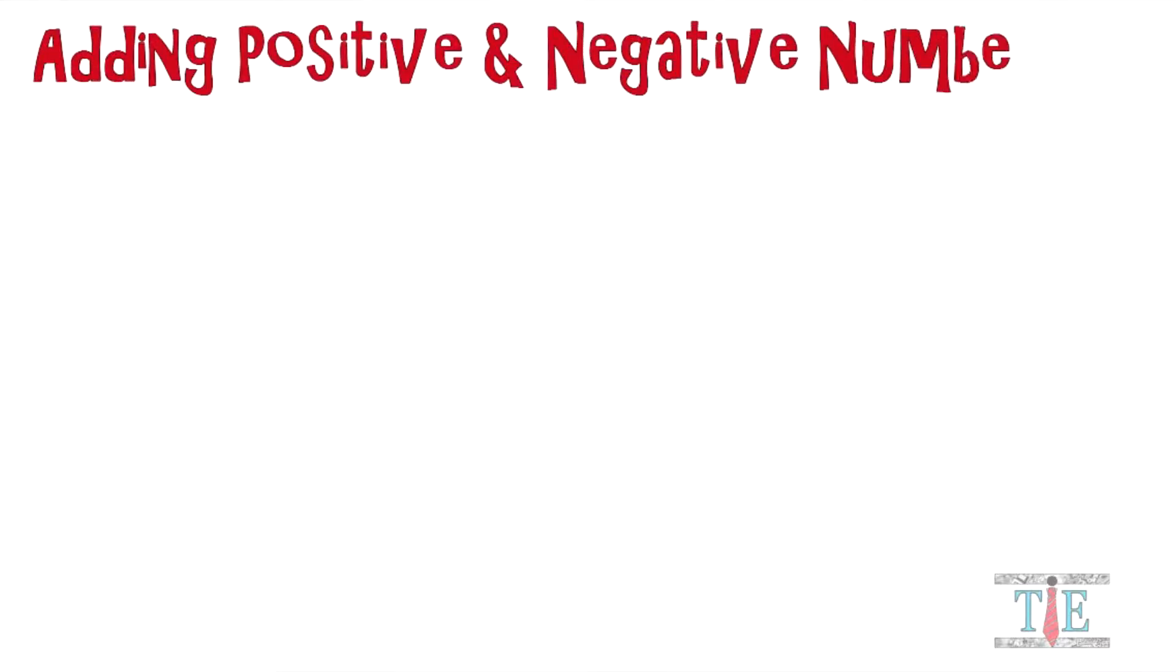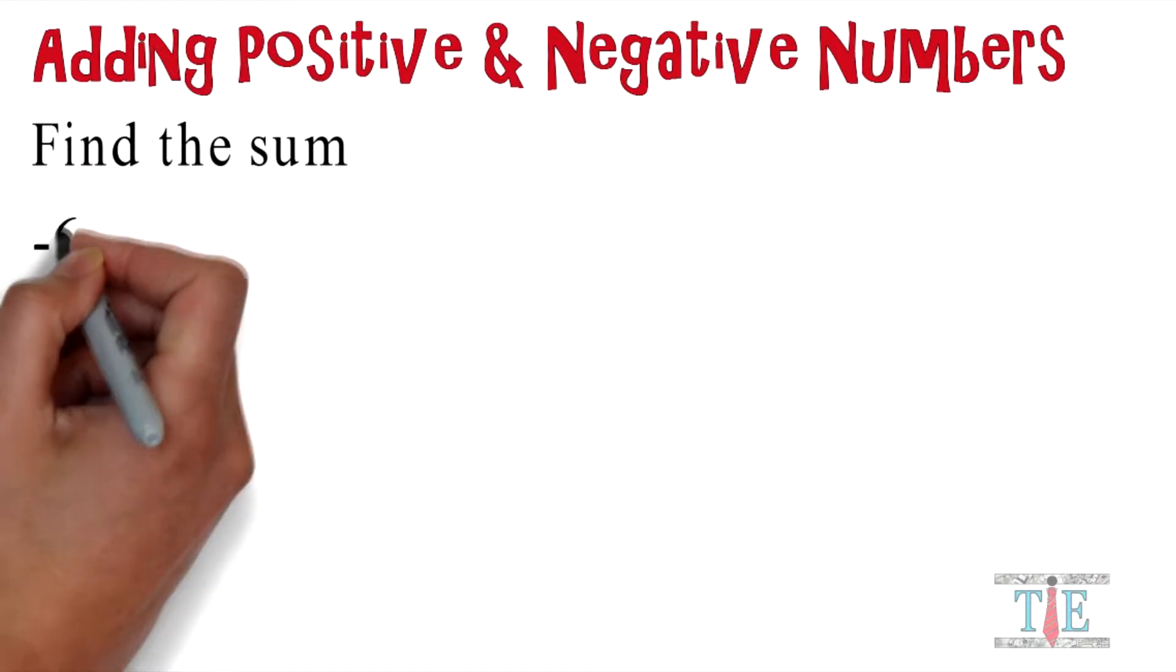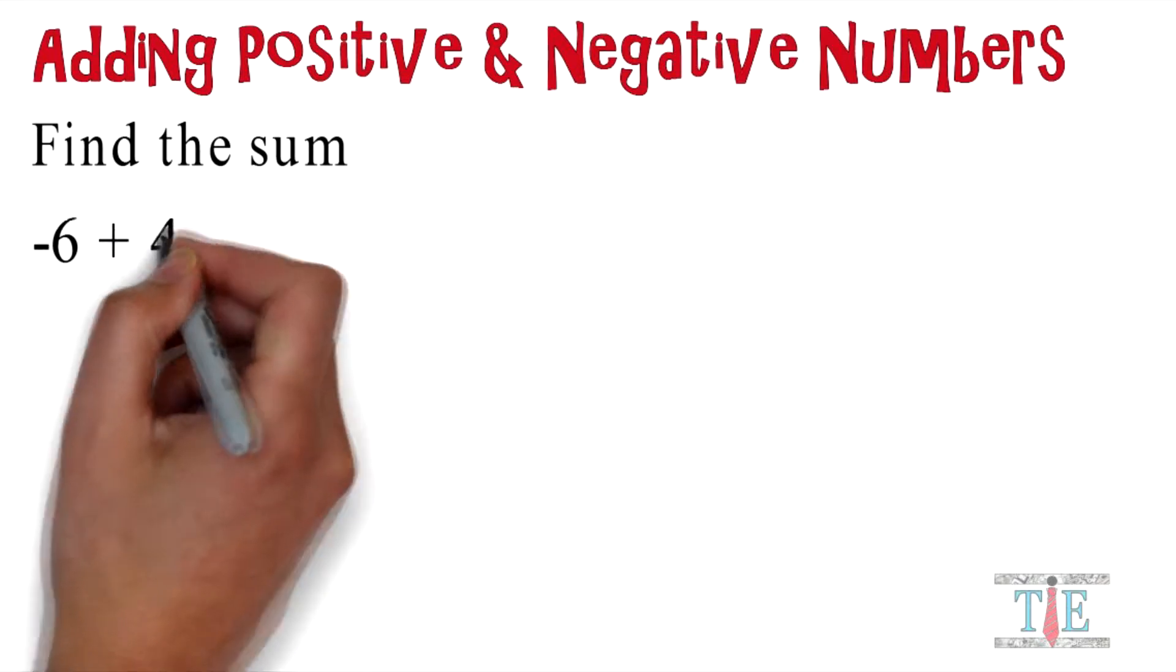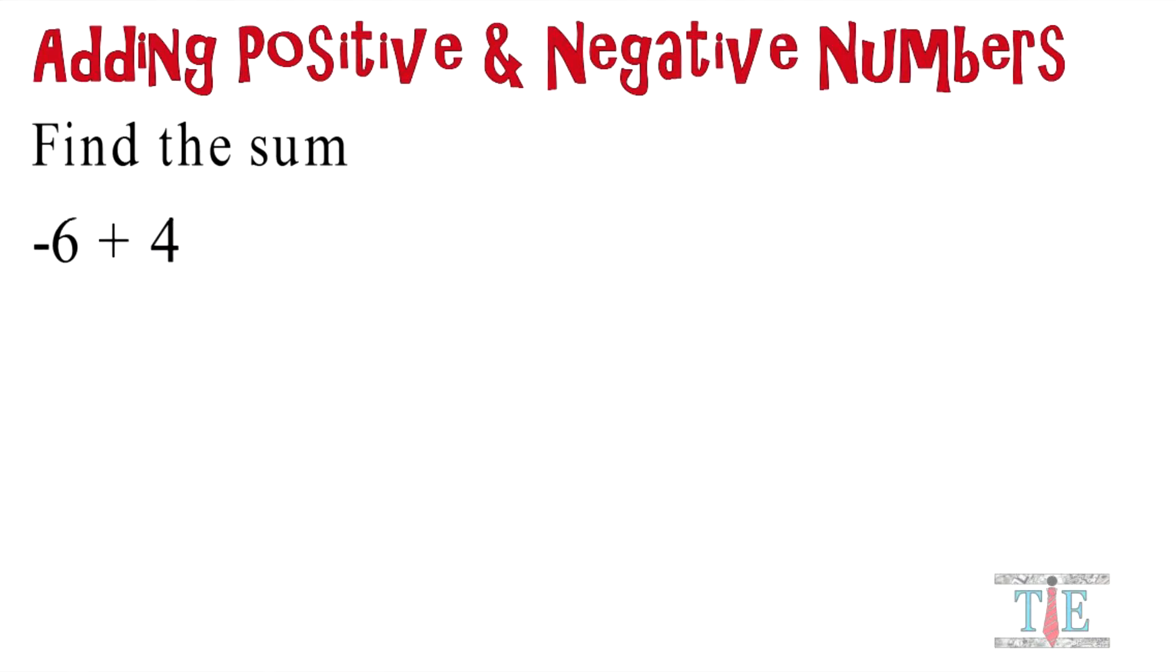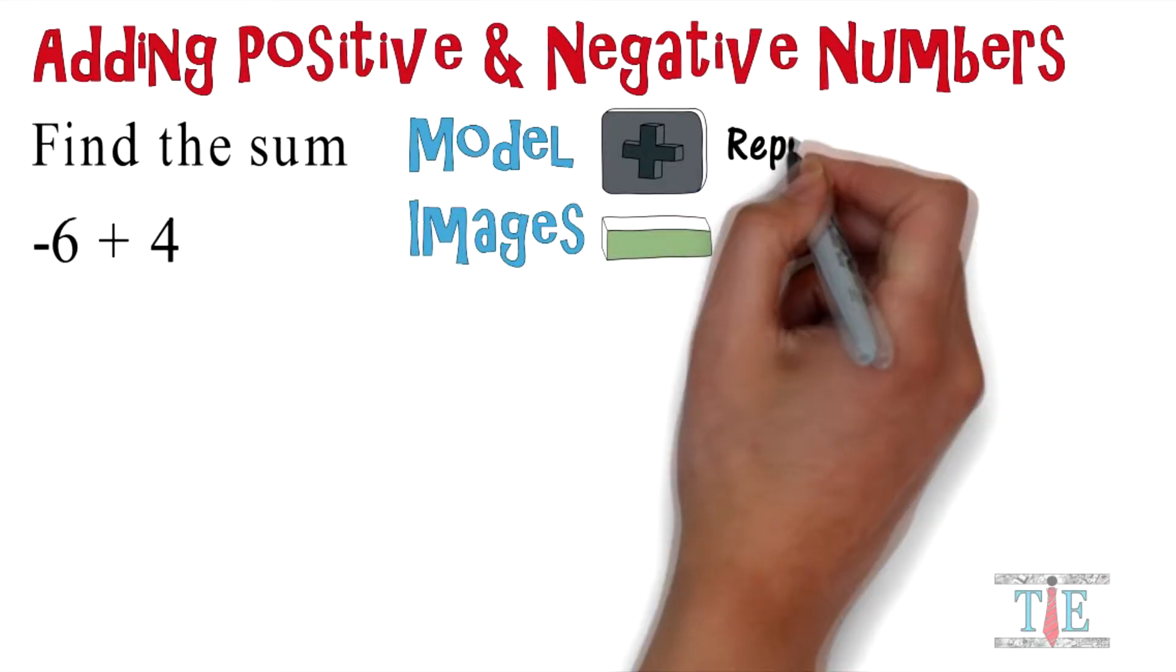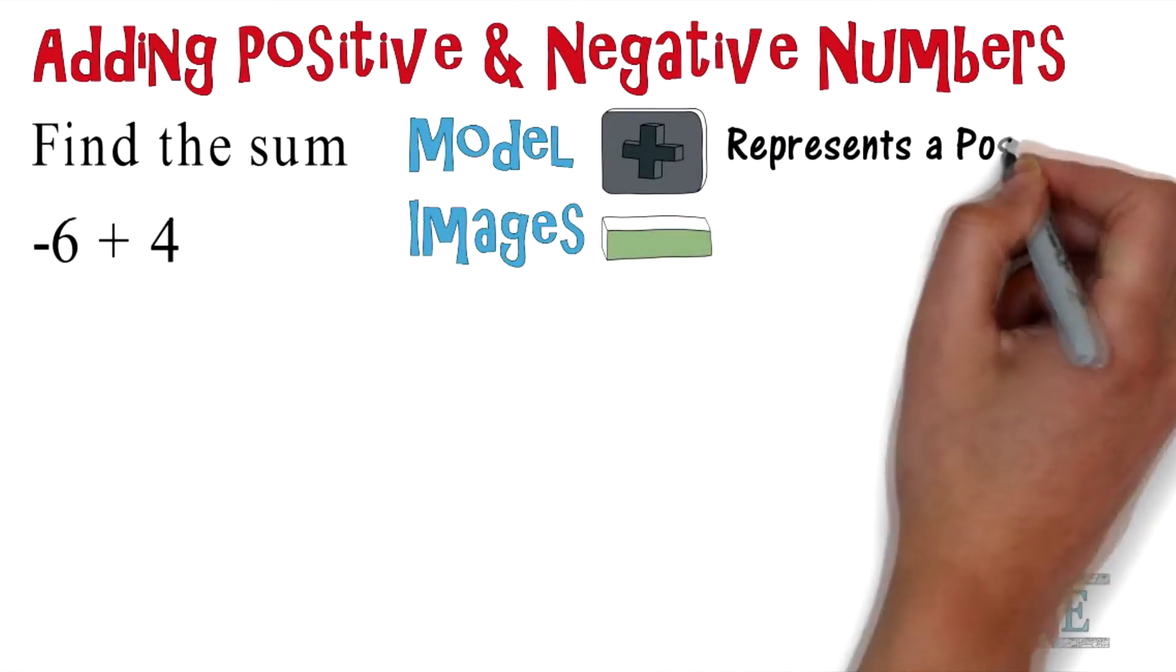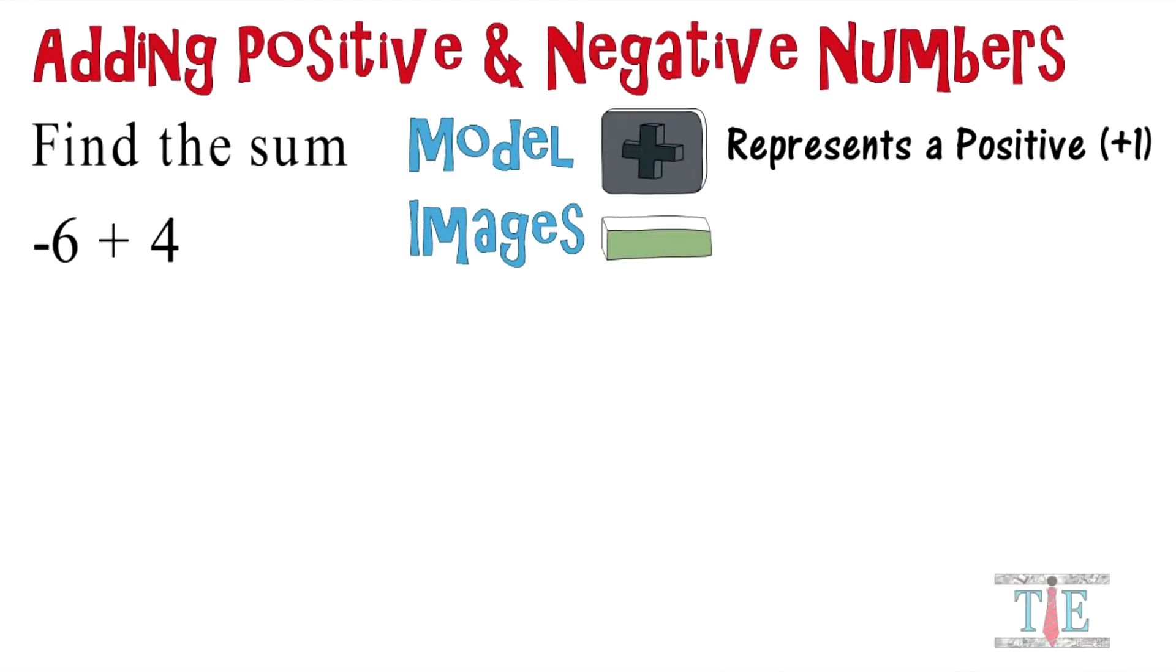Adding positive and negative numbers. Find the sum: -6 + 4. Here I'm going to provide some model images to help you understand. The first image represents a positive one.